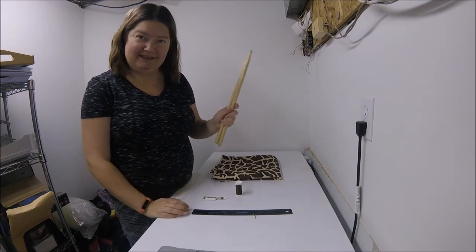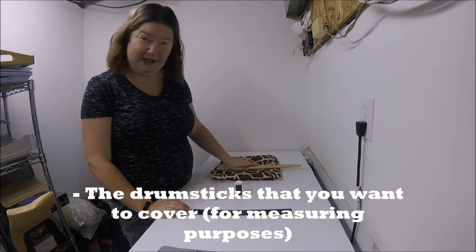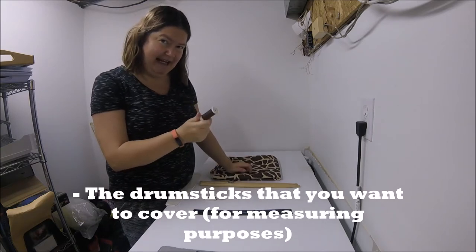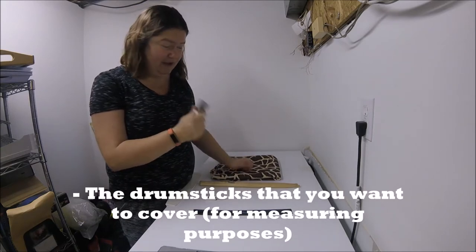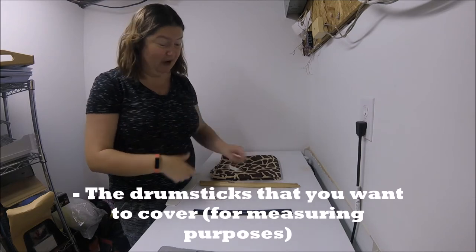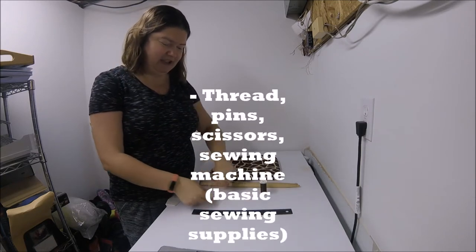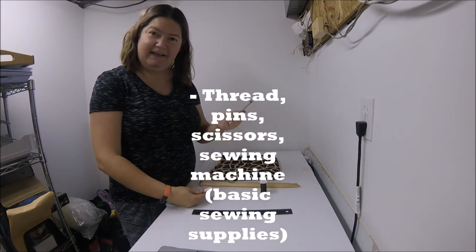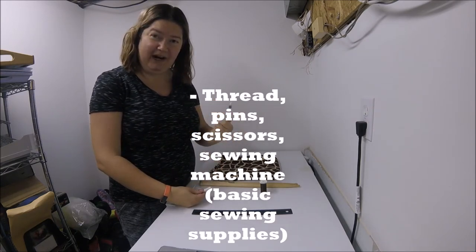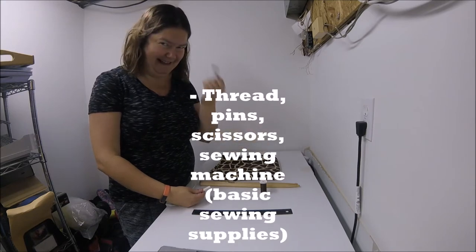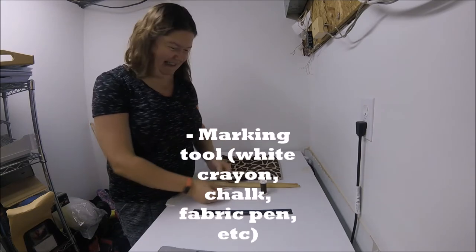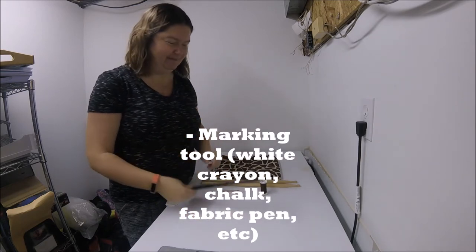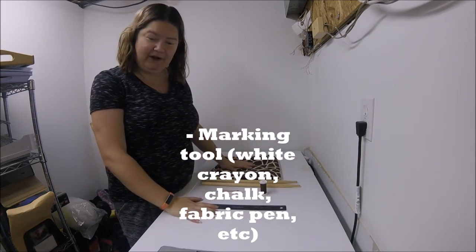You'll need the drumsticks that you want to cover just for measurement purposes, some matching thread and a sewing machine to sew, or you could do it by hand if that's how you roll. And a marking tool. I like to use either chalk or the useless white crayon. Always works for marking up fabric. That's the only good use for it. And a ruler for measuring, and we're going to get started.